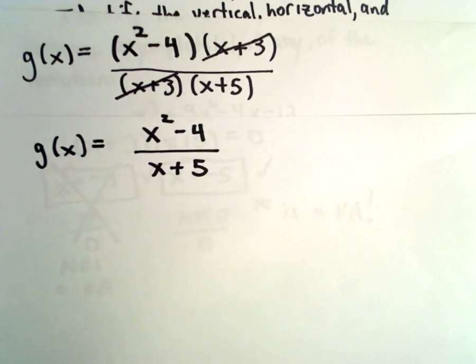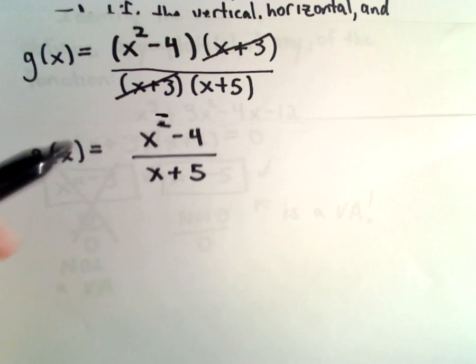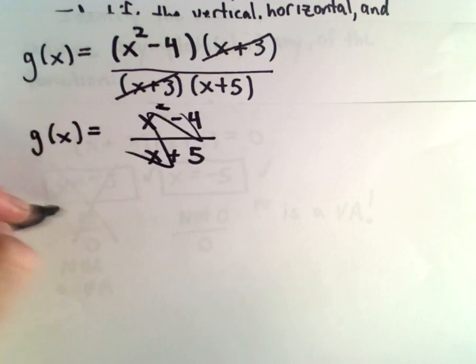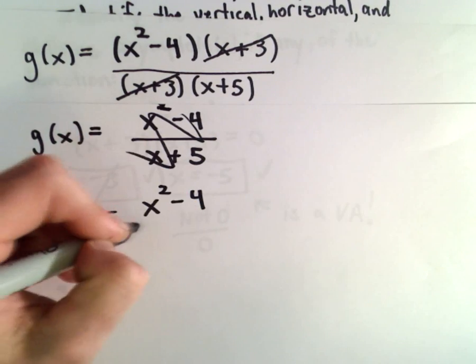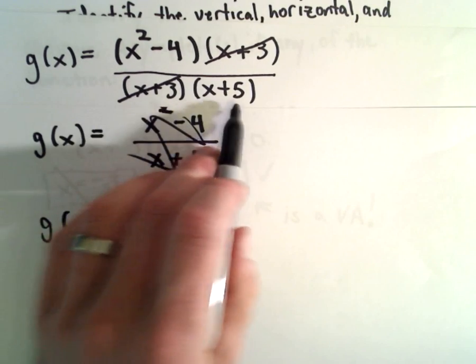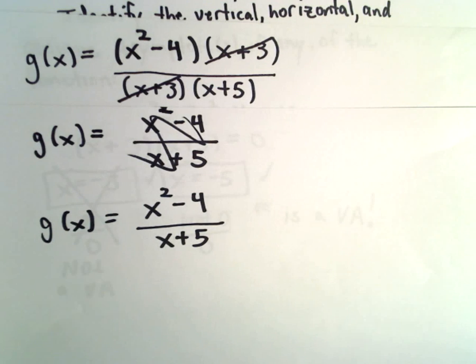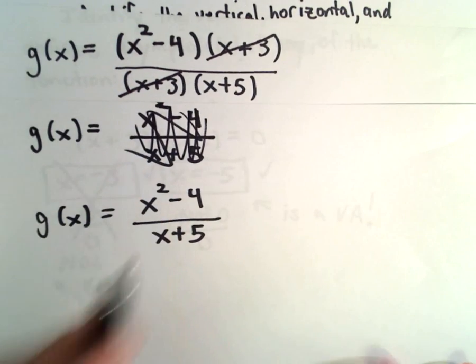Notice we could have factored the numerator a little further, x squared minus 4. That's a difference of perfect squares. We could have factored that as x plus 2 and x minus 2. But even with those two factors, it's not going to cancel out with the x plus 5.